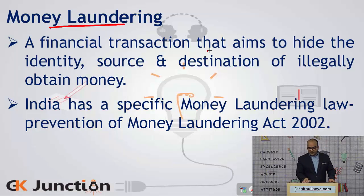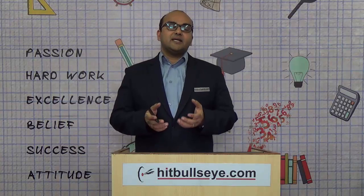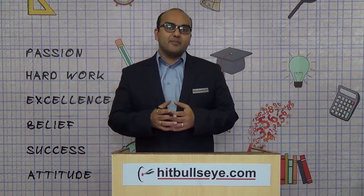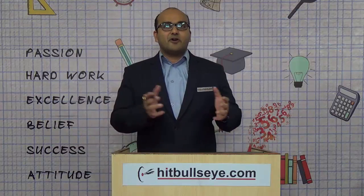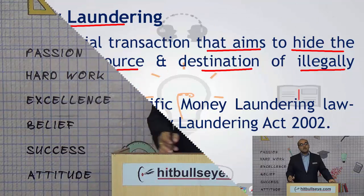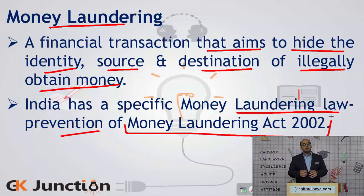The next concept is Money Laundering. This is a financial transaction that aims to hide the identity, source, and destination of illegally obtained money. Money laundering is the process by which we hide the identity or source of where illegally obtained money — for example through drug smuggling or robbery — is coming from. This money is made to go through certain processes so that the illegally obtained money is finally pumped into the legal economy of the country. An example is the Hawala Scam. As far as India is concerned, India has a specific money laundering law: the Prevention of Money Laundering Act of 2002.